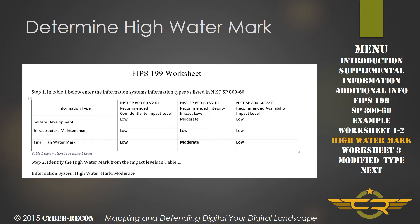We take the highest impact level from each of the C, I, A categories and determine the highest in each, which will be low for confidentiality, moderate for integrity, and low for availability. Of these three, we take the highest, and that will be the system's high watermark. In this example, it would be moderate.